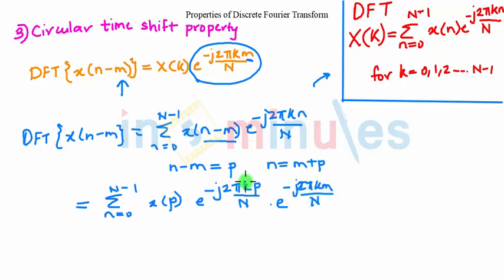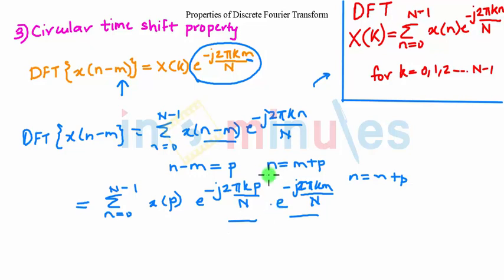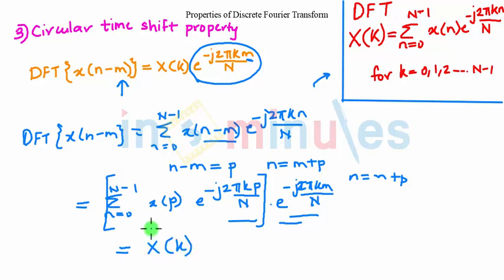As n equals m plus p, we have expanded the exponential term as e raised to minus j 2 pi k by N and e raised to minus j 2 pi k m by N. Clubbing those terms, we finally get x of k — the DFT of x of n — multiplied by the term e raised to minus j 2 pi k m by N. Thus we prove the circular timeshift property.